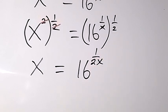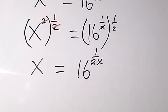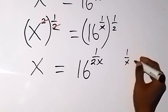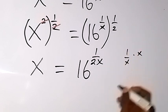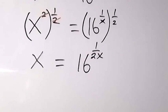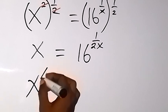Also on this side, let's try to remove this x. What can remove that x? We have 1 over x, so we should multiply by x so as to cancel the x. That means we are multiplying both sides by the power of x, so we have the power of x on both sides, and this will become x raised to power x.